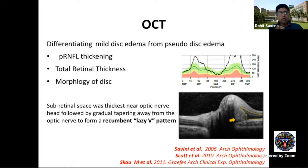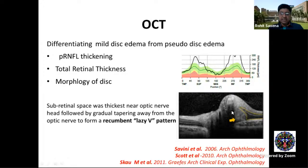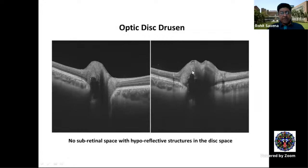OCT is increasingly used to assess the optic nerve. Disc edema on OCT shows the RNFL lines running off the normal green pattern. A 'lazy-V sign' shows fluid tapering away from the disc. In drusen, you see an elevated disc with shadowing behind the hyperreflective structures but no sub-retinal spaces or fluid — differentiating drusen from papilledema.